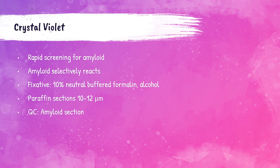The next stain for the detection of amyloid deposits is the crystal violet stain. Crystal violet is not as specific as the Congo red method for amyloid, but it can be used as a rapid screening method. Tissues should be fixed in 10% neutral buffered formalin or alcohol, and paraffin tissue sections need to be cut 10 to 12 microns in thickness. Any tissue containing amyloid can be used for quality control.